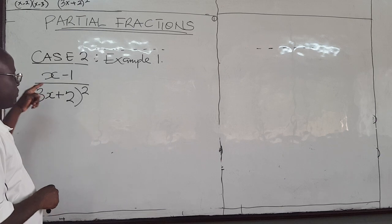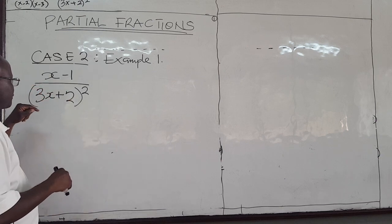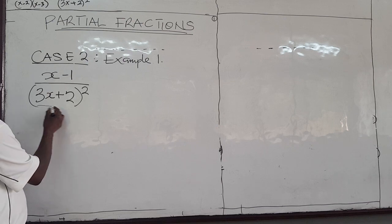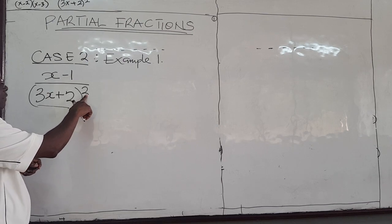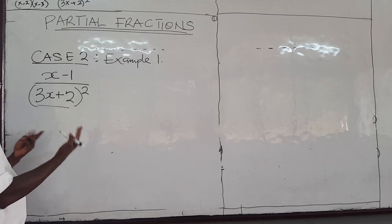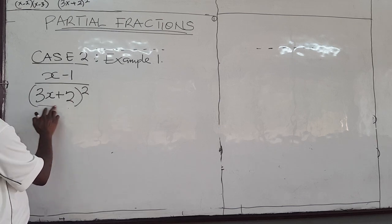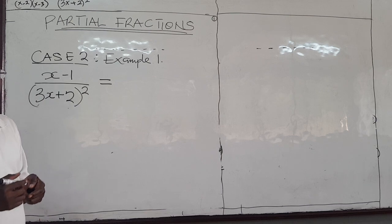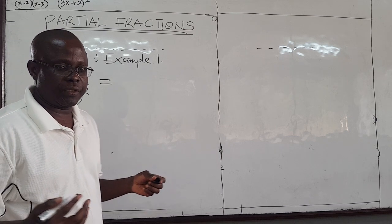So this is the case where we have a partial fraction where the denominator has a linear factor which is repeated. Here, 3x plus 2 is linear, but it's raised to the power 2. So how do you bring this into partial fractions? How do you decompose it?